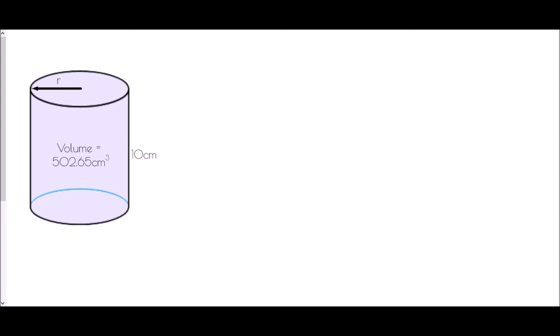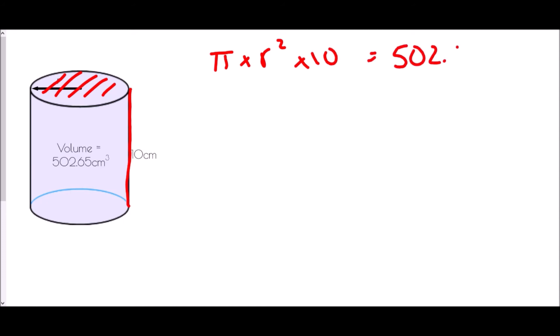Let's try it with a cylinder. In this case, I'm trying to find out what the radius of this cylinder is. We've been told that the volume is 502.65 centimetres cubed. In terms of finding the radius, the first thing I need to think about is how I found the area of the cross section. The area of the cross section was pi times r squared, and r is all that we don't know. So pi times r squared multiplied by 10 — the length — has given me 502.65.